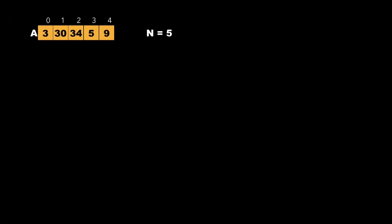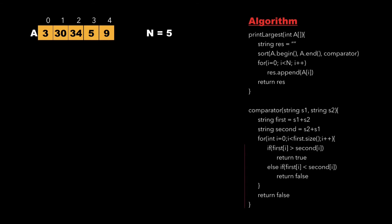So now let's have a look at the approach to solve this particular problem. Let's consider the same example where we have 5 numbers namely 3, 30, 34, 5, and 9. The algorithm shows that we first call the print largest function with arguments as an array A, create an empty resultant string, and then sort the array A based on a comparator function. We will be using the concept of bubble sort in order to sort this particular array.